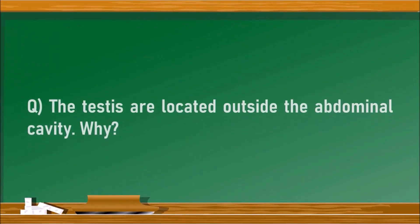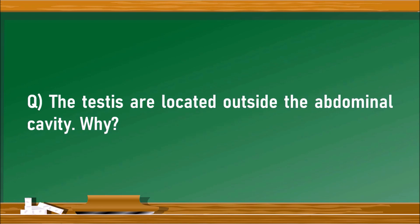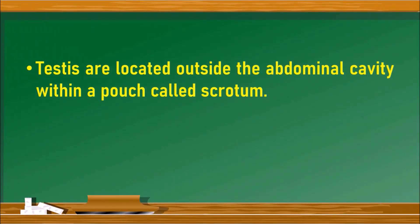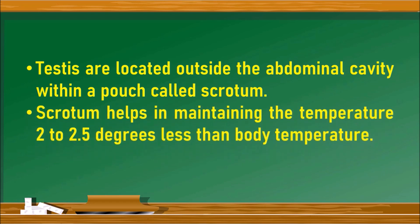The testes are located outside the abdominal cavity in human beings. Why? Because the testes are located outside the abdominal cavity within a pouch called scrotum. Scrotum helps in maintaining the temperature 2 to 2.5 degrees less than body temperature. This less than body temperature is necessary for sperm formation.